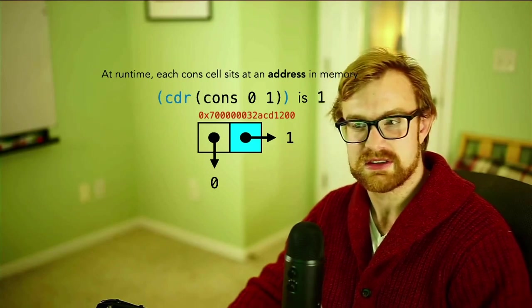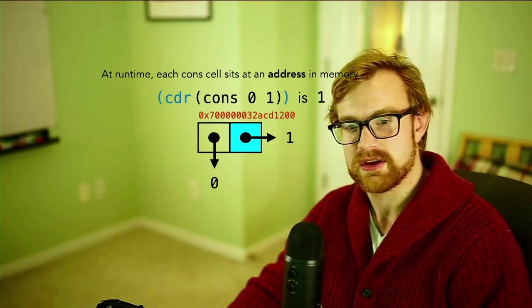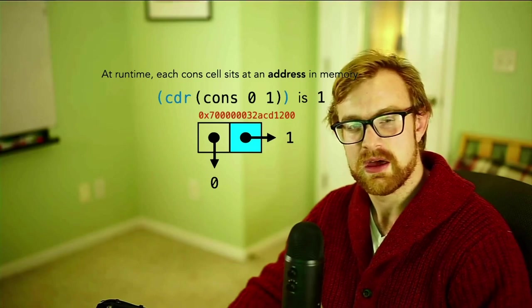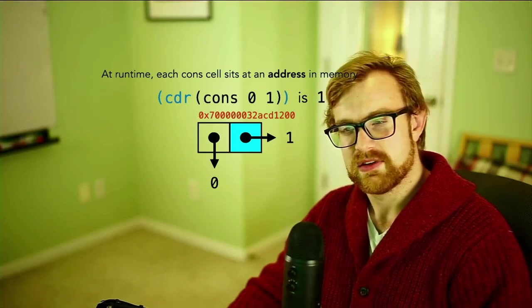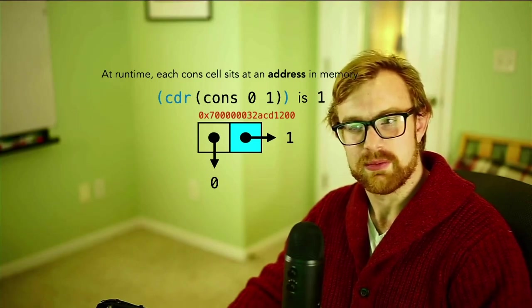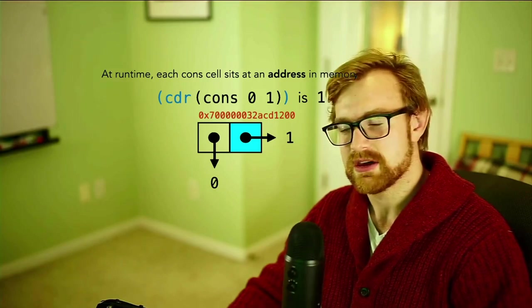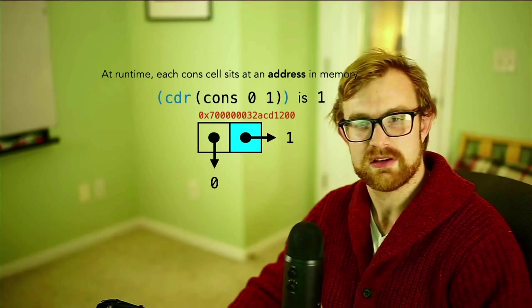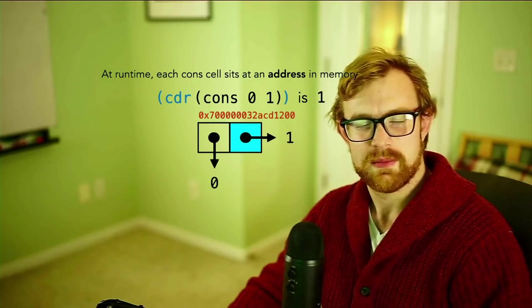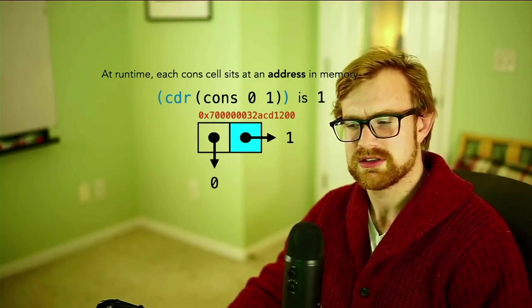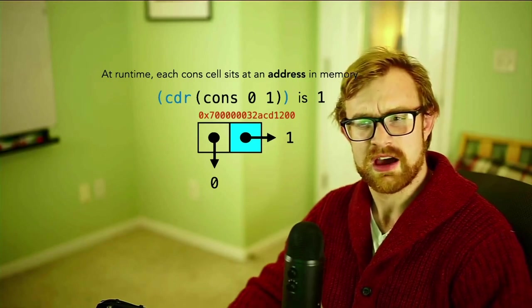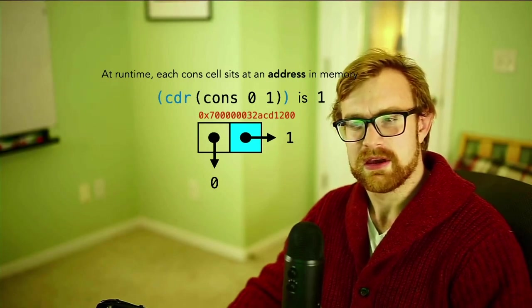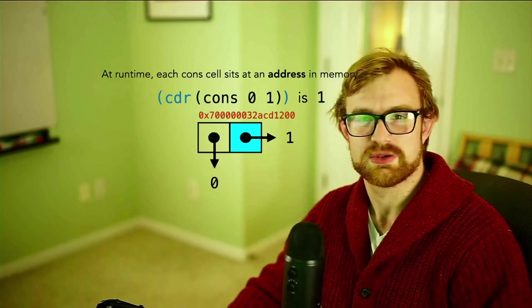This is a real representative address that you might see, for example, on a 64-bit operating system. But from the perspective of Racket, you'll never actually be able to understand where this is at because it's at a lower abstraction level. So this is not something you need to know for your day-to-day Racket usage, but I find it very important to understand under the hood at runtime there is some layout happening.